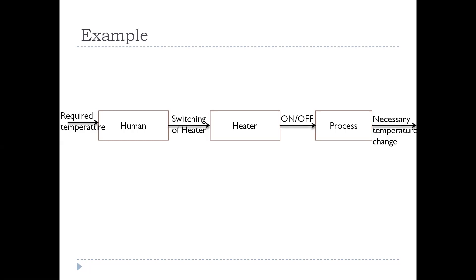In an open loop system, the operation is performed but the output is not checked — we assume we get the necessary output. For example, if we set an AC remote to 20°C we assume the room is at 20°C. But if doors and windows are open the temperature will rise and we would not know, since the remote still shows 20°C. To avoid this problem we use closed loop control, which has a feedback mechanism: we constantly measure the output and feed that measurement back to the control unit, which makes the necessary changes to adjust the output accordingly.